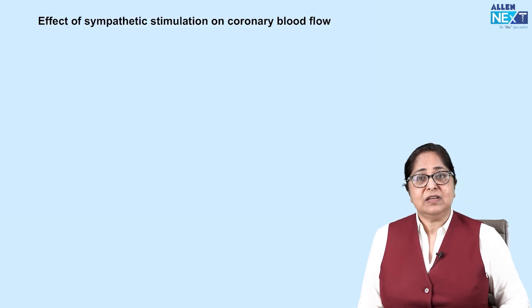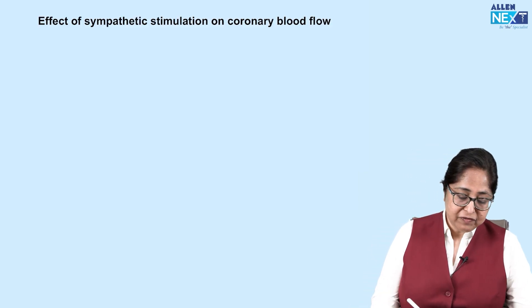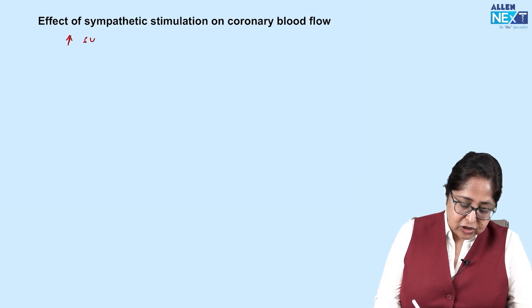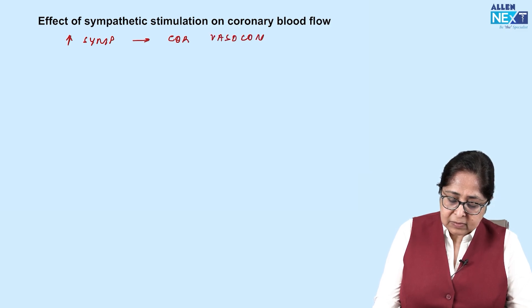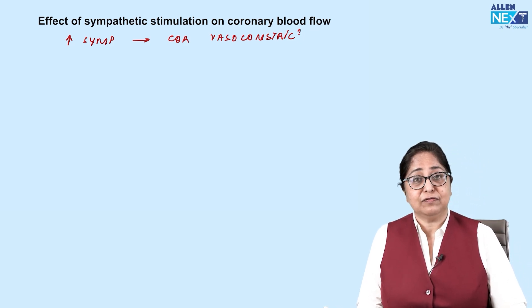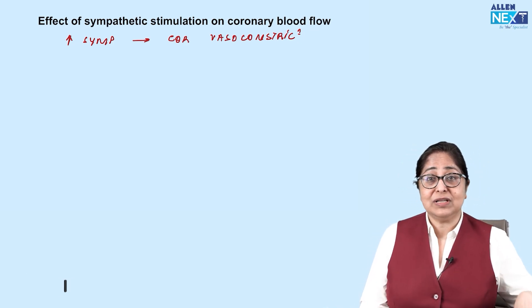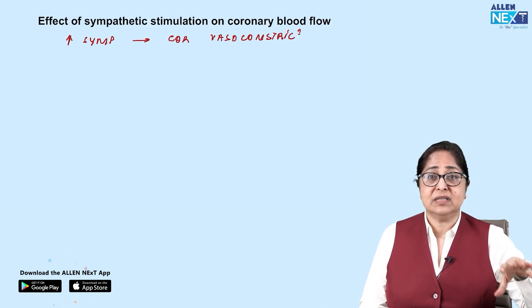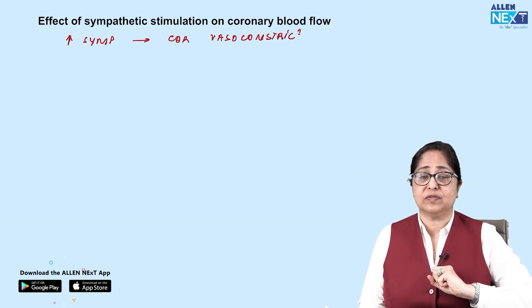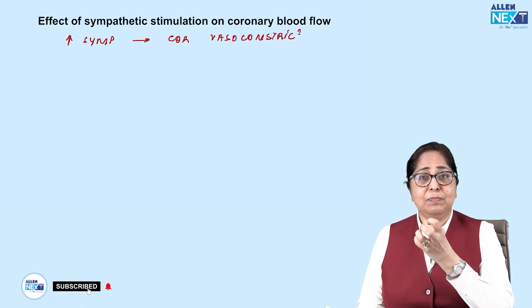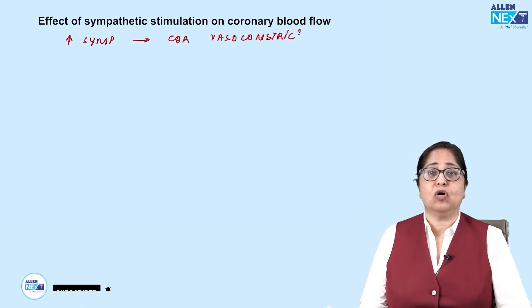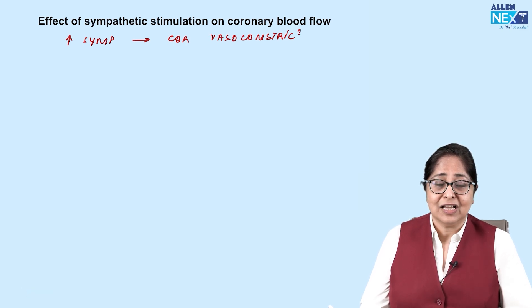What is the effect of sympathetic stimulation on coronary blood flow? If sympathetic discharge increases, this will cause coronary vasoconstriction, and there will be a decrease in coronary blood flow. This does not make sense because increased sympathetic discharge means increased heart rate and increased force of contraction — meaning oxygen demand has increased — but if the blood vessels constrict, coronary flow will reduce.